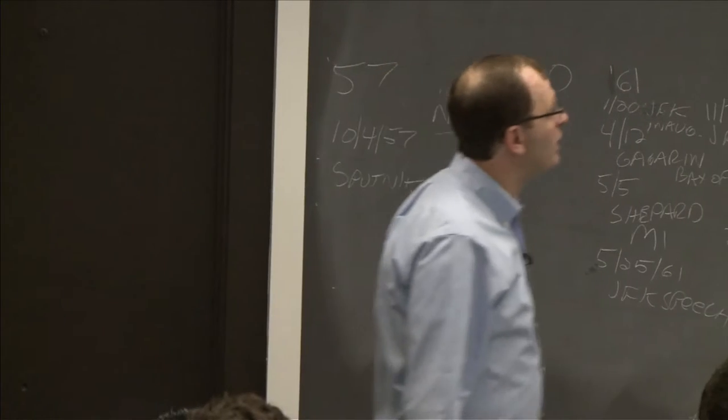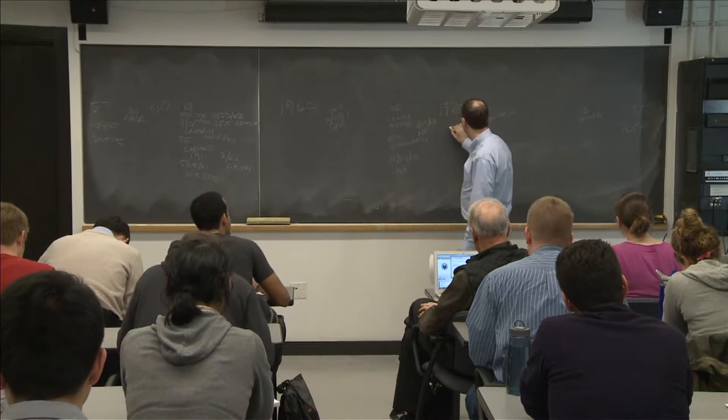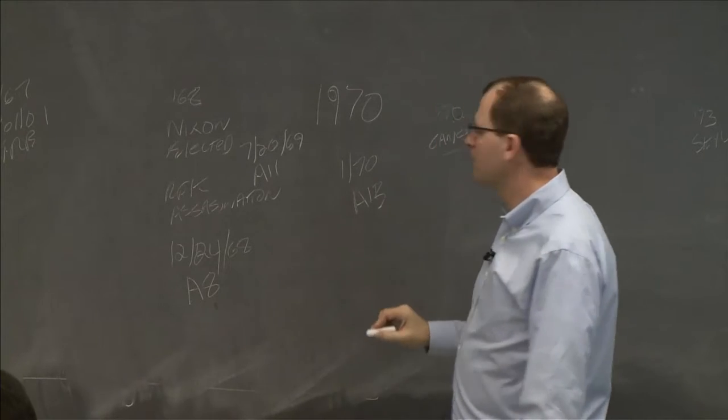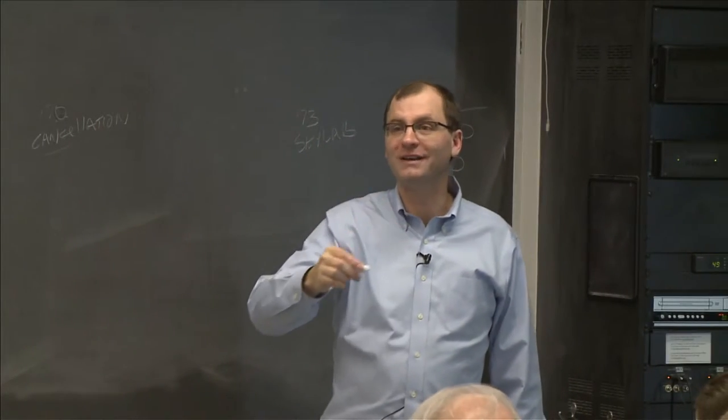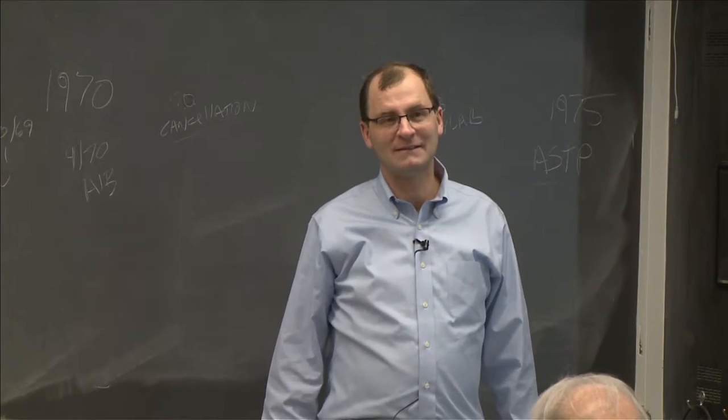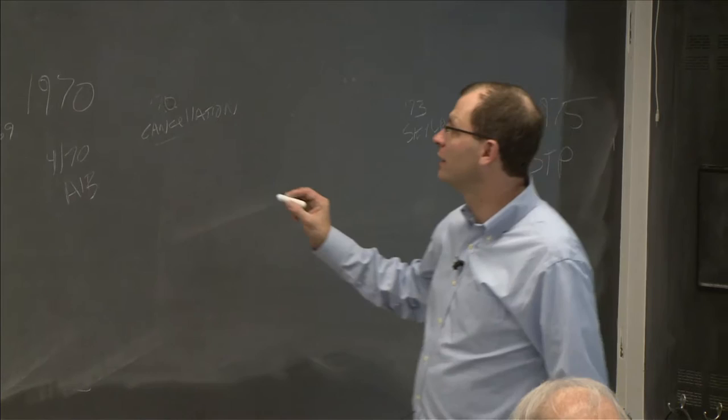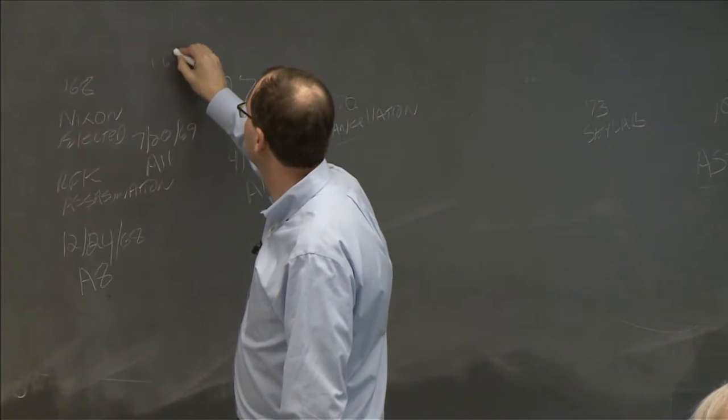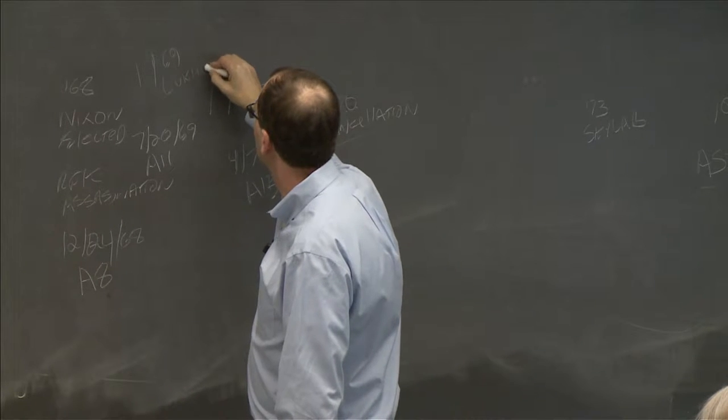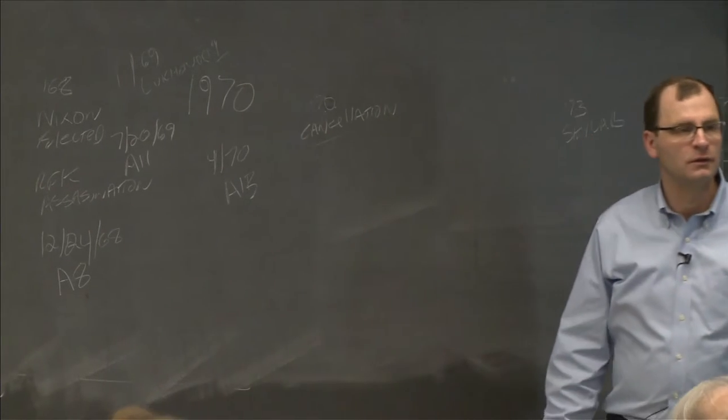The question he asked his guys: what promises dramatic results that we could win? And part of that was the kind of leapfrog strategy. Well, the Soviets can probably do this and that. But if we just skip three steps, maybe we'll get there. What else? 1970, Apollo 13. Also January? That's April. The Soviets? In January 69, Soyuz 1.